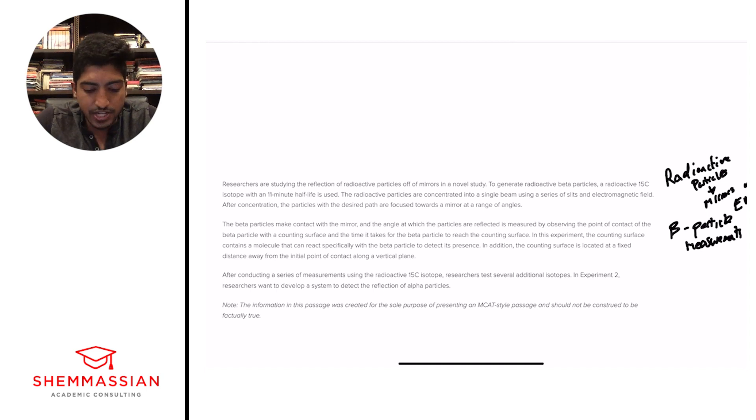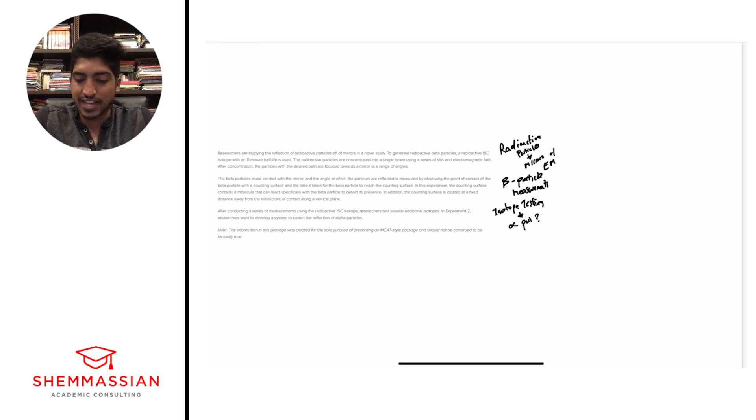After conducting a series of measurements using the radioactive 15C isotope, researchers test several additional isotopes. In experiment two, researchers want to develop a system to detect the reflection of alpha particles. Alright, so what's happening? And here we have isotope testing. And why are we doing the isotope testing? To look at alpha particles in the future. So that's the idea. It's like we're setting it up where we're talking about an experimental setup. We want to look at how it relates to beta particles and whether we can use this to relate to alpha particles. That's the big picture of the entire narrative of this passage. But with that, we've knocked out the passage. Let's get right into the questions.